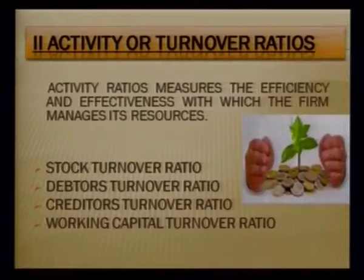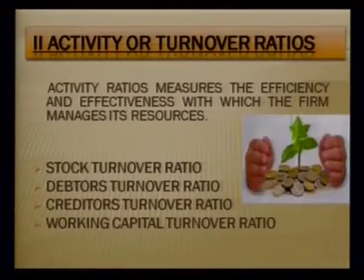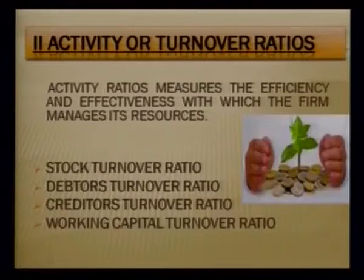We are going to discuss all four types of ratios in detail. The activity ratio, also called the turnover ratio or performance ratio, is based on the fact that profits depend upon the rate of turnover — meaning the rate at which the business is deploying its assets. The question is whether the business is using its resources in an efficient and effective manner.